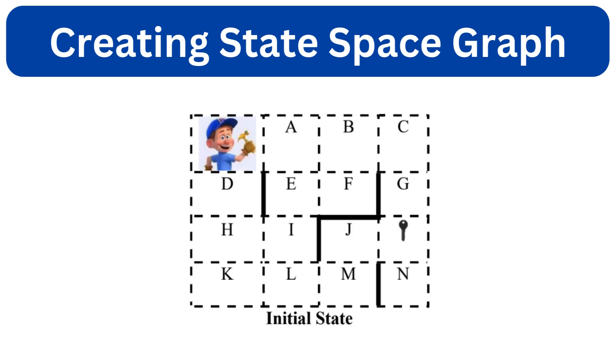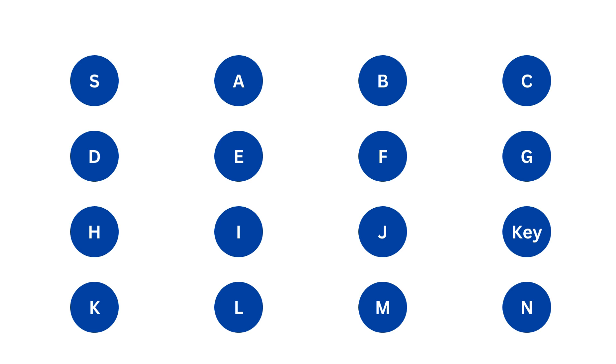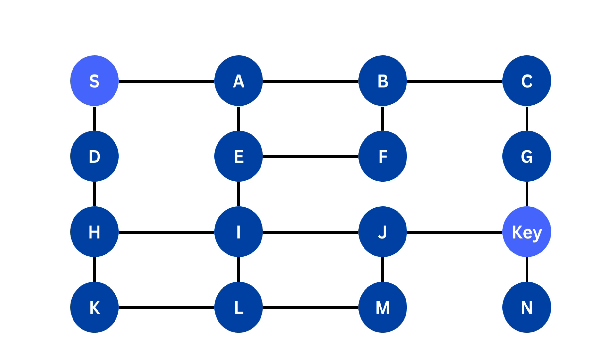Now we create 16 nodes representing each grid cell. Let's mark the possible connections between them as listed previously. Now this is our graph. Each node represents a position and each edge represents a possible move the agent can make. The goal is to find the path from S to the key.